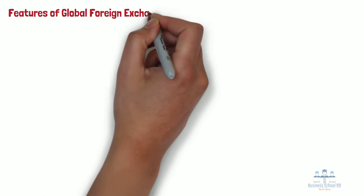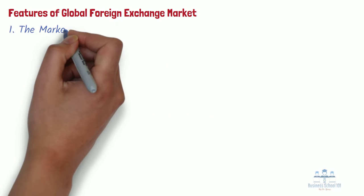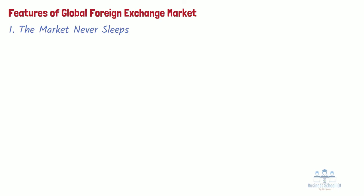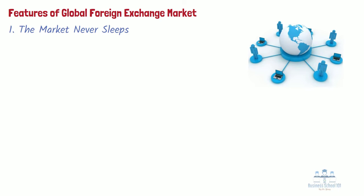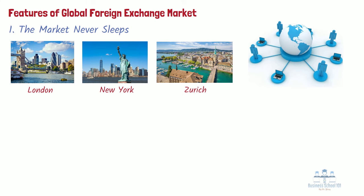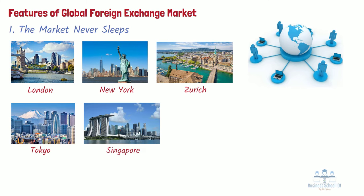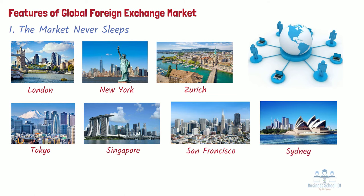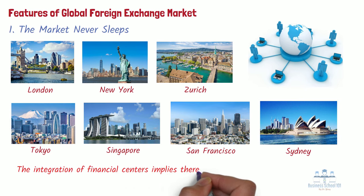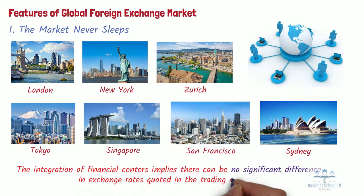There are two major features of the global foreign exchange market. First, the market never sleeps. The foreign exchange market is not located in any one place — it is a global network of banks and brokers. The most important trading centers in the world are London, New York, Zurich, Tokyo, and Singapore. London, New York, and Tokyo are all shut for only three hours out of every 24. During these three hours, trading continues in minor centers, particularly San Francisco and Sydney. The global exchange market is the integration of these various trading centers, with high-speed computer links effectively creating a single market, meaning there can be no significant difference in exchange rates quoted in different trading centers.